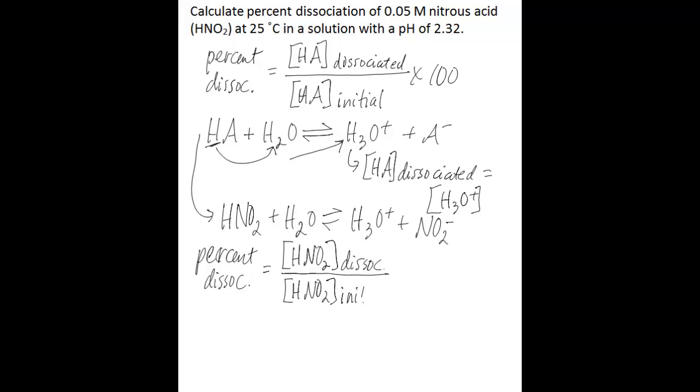We know that the numerator is also equal to the concentration of hydronium ions, still divided by the initial concentration of nitrous acid multiplied by 100.